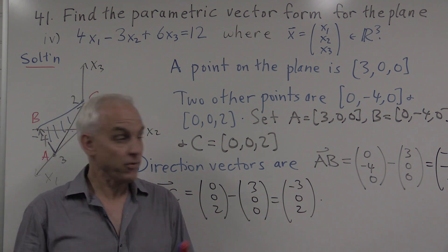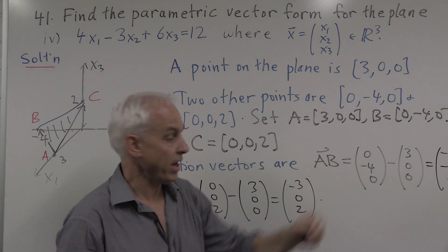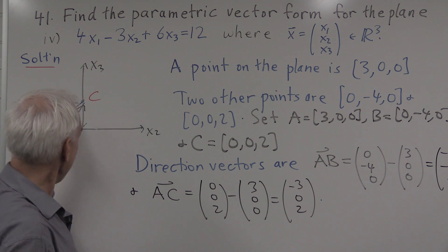So we have all the ingredients. We have a point on the plane, let's say this point A. And we have two direction vectors, AB and AC.